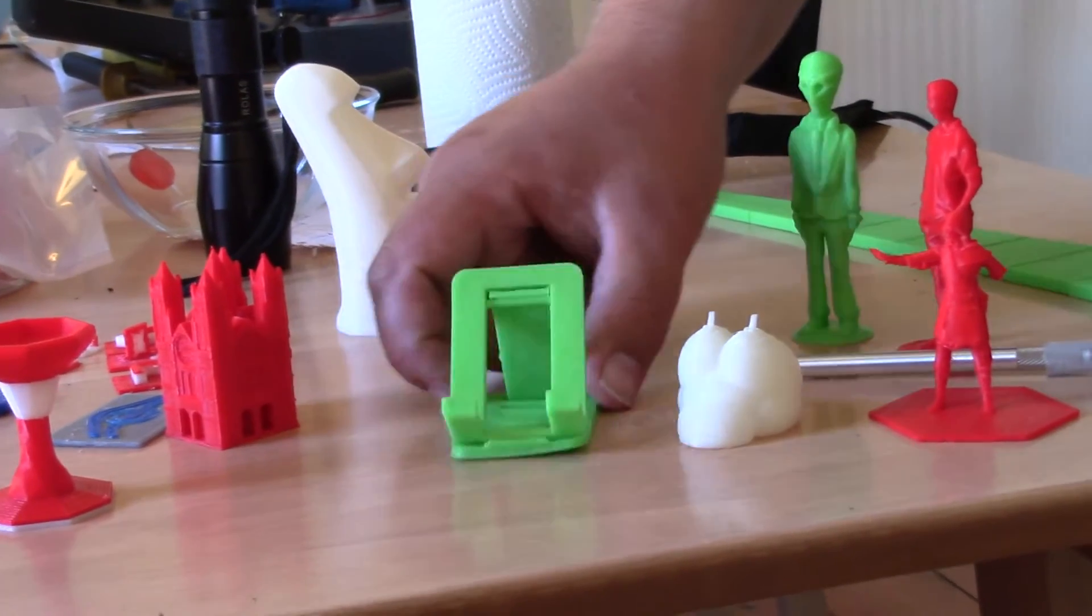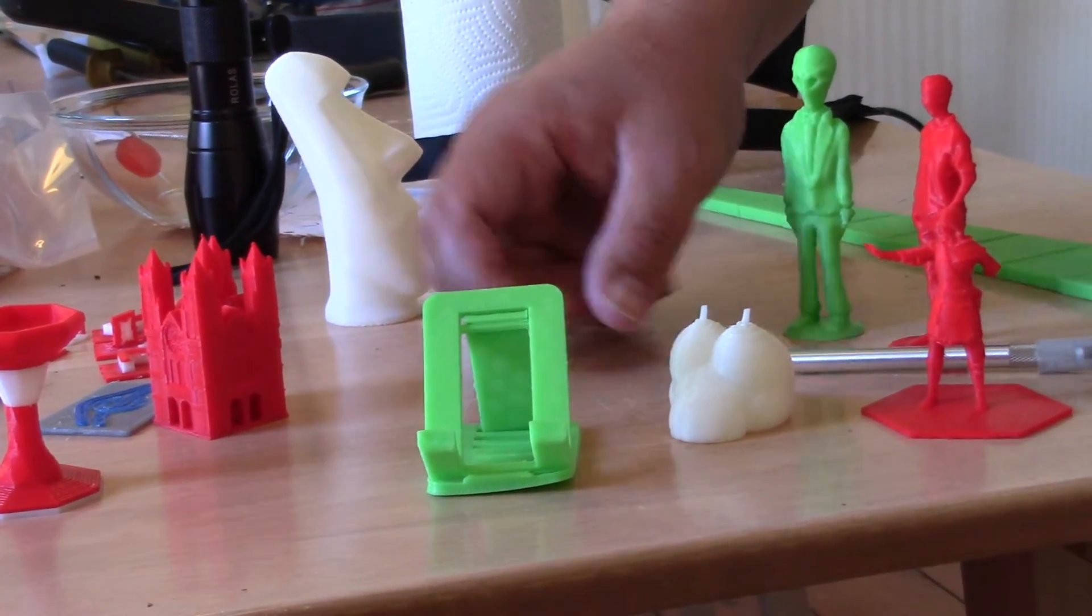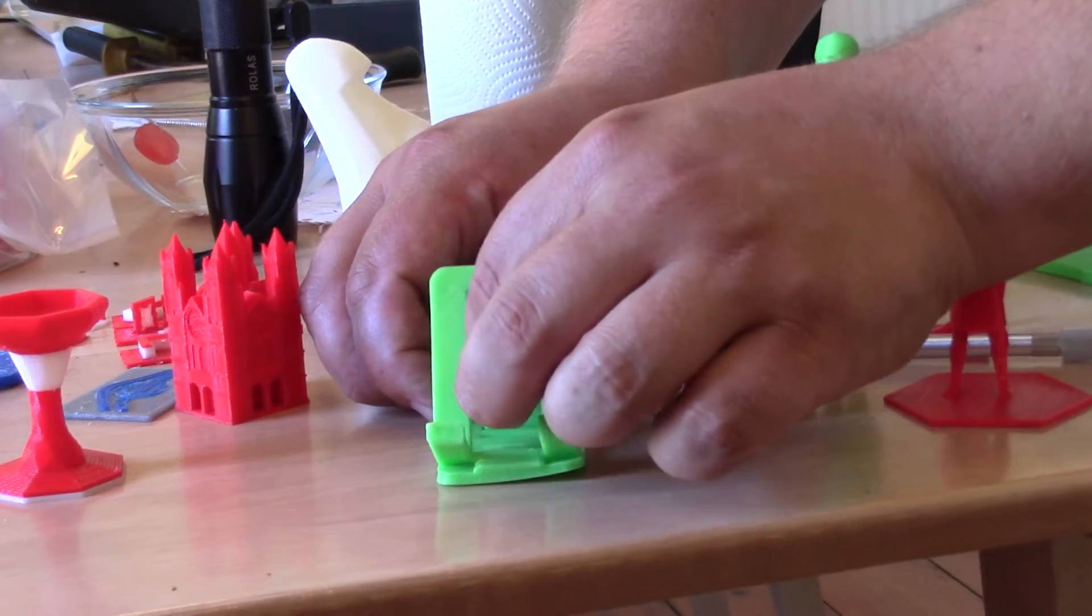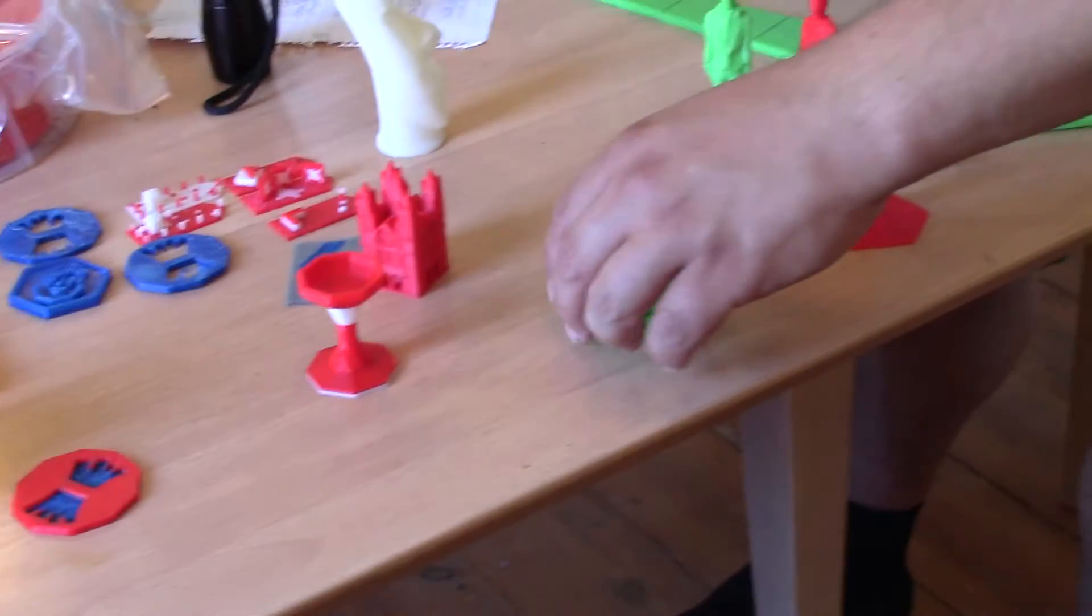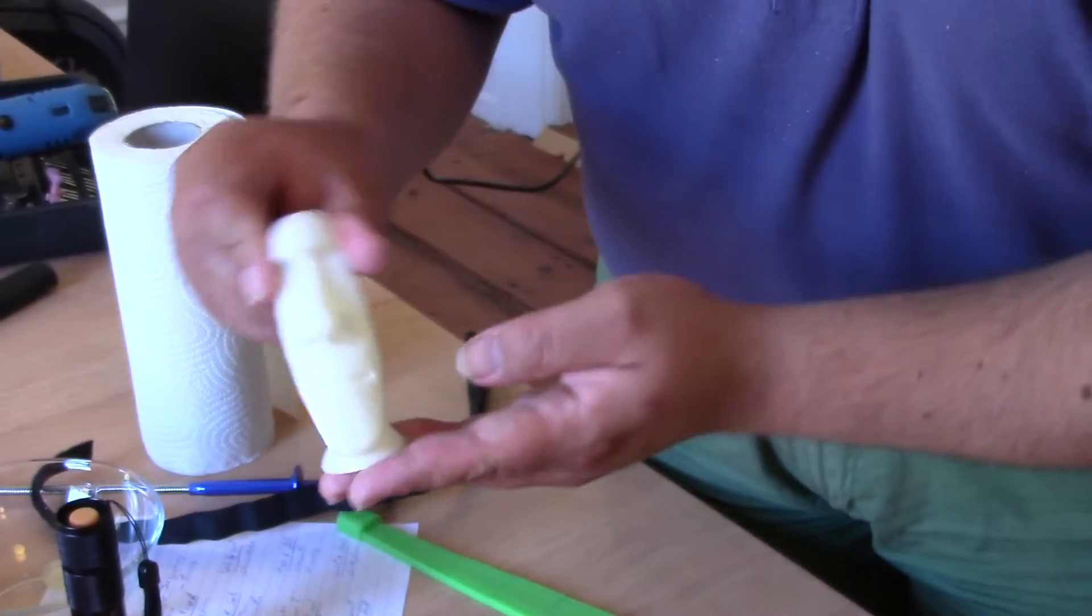Then there's this little handy phone stand where you're supposed to be able to move it around. It's not quite done yet. A little Easter Island head.